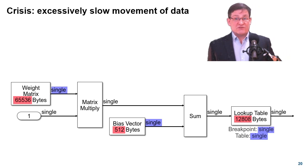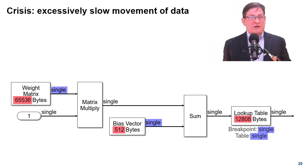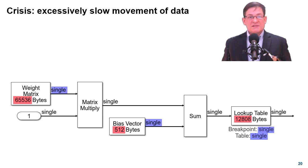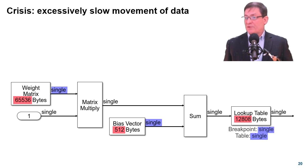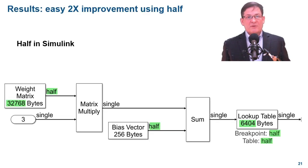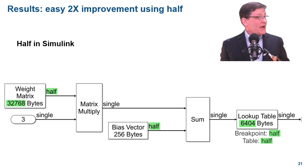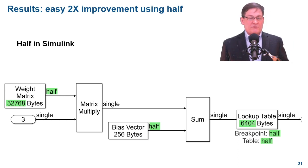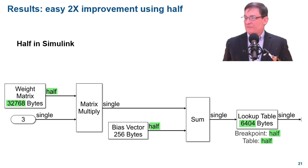Let's finish with an example that impacts all designs and all targets. The problem is it takes too long to move large parameters from storage memory to compute memory. A simple approach is to use reduced precision for big parameters. For parameters with values less than 65,000, half-precision floating-point can be an easy way to improve speed by 2x. Half is already available in MATLAB and is newly available in Simulink. For even greater compression, smaller fixed-point types can be used.